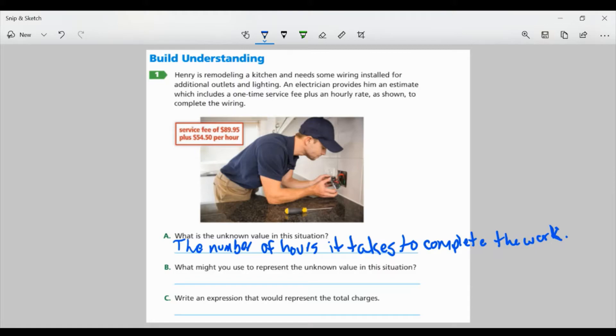Part B, what might you use to represent the unknown value in this situation? Well, the unknown value is hours. You can use a variable. So what we want to use is a variable. And you can choose whichever variable you want to use. A variable is a letter that we use to represent an unknown value. In this case, we don't know the value of hours. So I'm going to use H for hours. You can use whatever variable you want. X is a common one. A, B, C, X, Y, Z, either one, it doesn't matter. But in this case, what makes sense for me is to use H for hours.